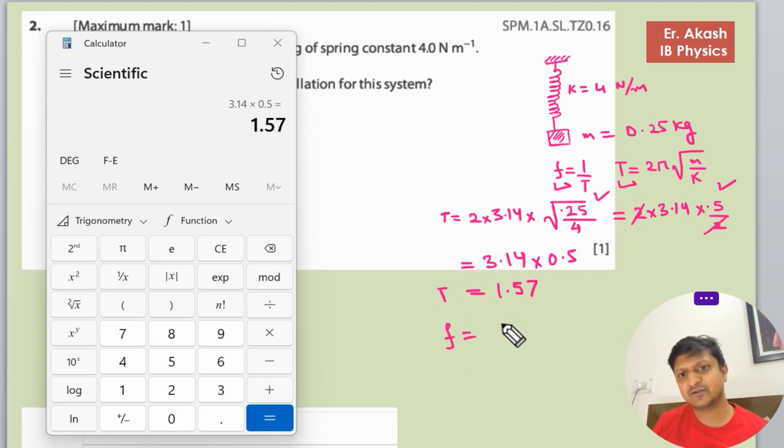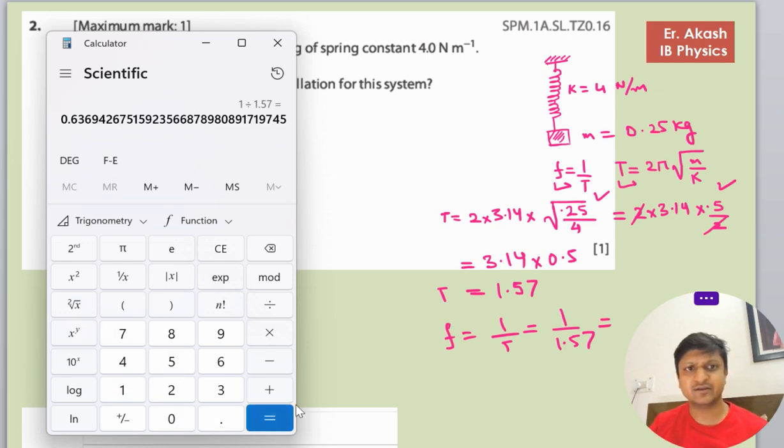But we have to find the frequency. Frequency is 1 by T, so this is 1 by 1.57. Using the calculator, 1 divided by 1.57 equals 0.63.